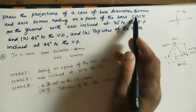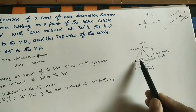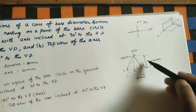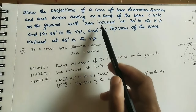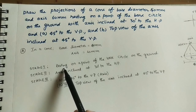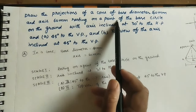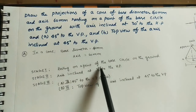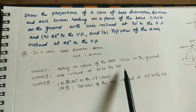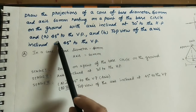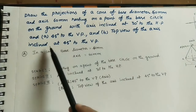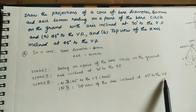Write down the given data: base diameter is 40mm, and the axis is 60mm (the height of the cone). The conditions are organized into stages — Stage 1: cone resting on a point of the base circle on the ground. Stage 2: axis inclined at 30 degrees to the HP. Stage 3 has two bits: first bit — axis inclined at 45 degrees to VP; second bit — top view of the axis inclined at 45 degrees to VP.